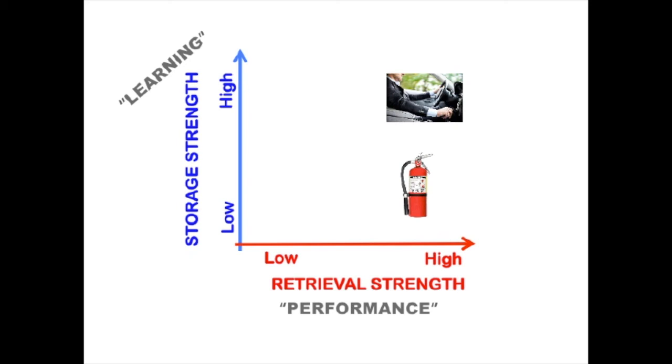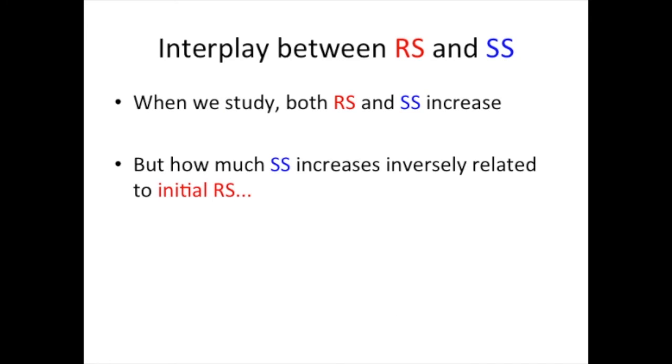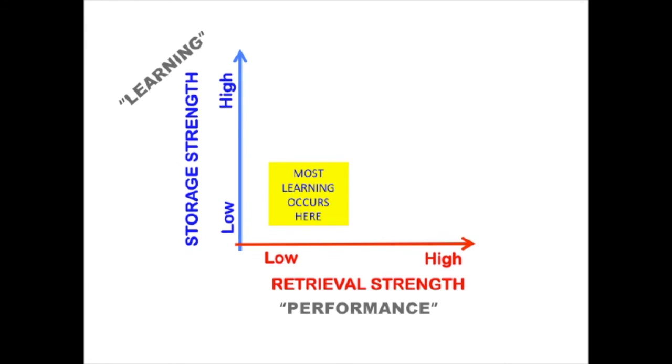Let's focus on performance learning, because it turns out building up storage strength is actually quite tricky, and it's tricky because retrieval strength and storage strength are related in a peculiar way. When we study a piece of information, both the retrieval strength and the storage strength of that information increases. But how much storage strength or learning increases by is inversely related to the initial retrieval strength of that information. That is, when retrieval strength is low, when something is difficult to recall, that is where there is the greatest potential for boosting learning.